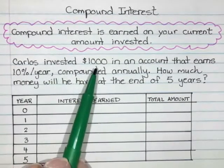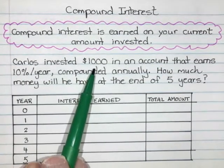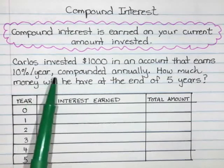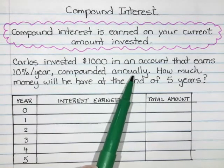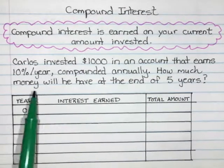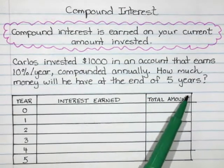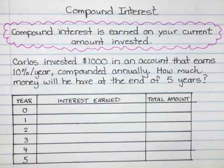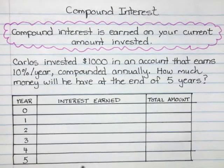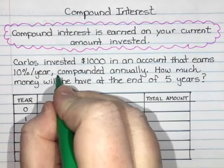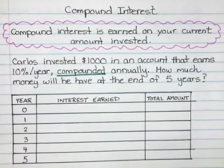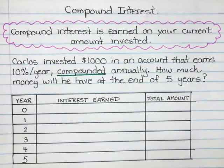We're going to try a question. It says: Carlos invested $1,000 in an account that earns 10% per year, compounded annually. How much money will he have at the end of five years? The way you can tell it's compound interest is it will have the word 'compounded' in it. If you don't see the word 'compounded,' it is probably not compound interest.